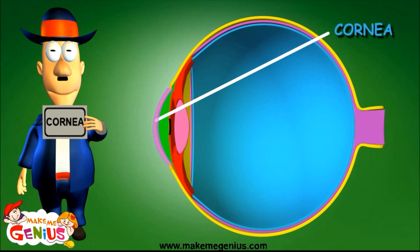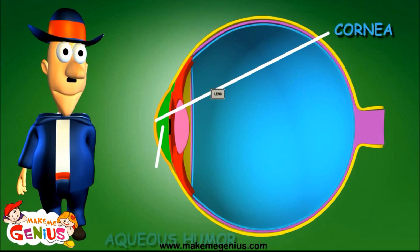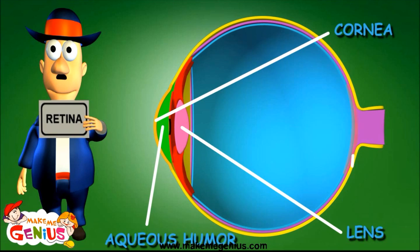This light passes through the cornea, the aqueous humor, and lens to fall onto the retina.